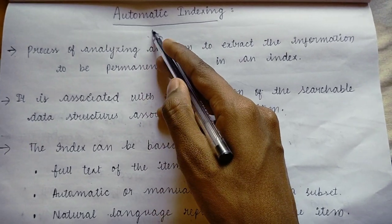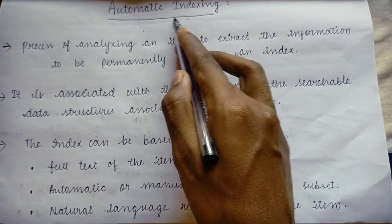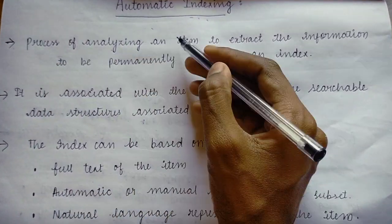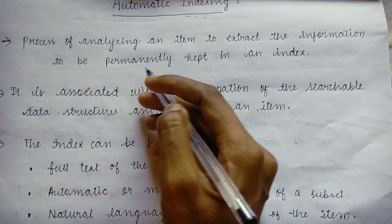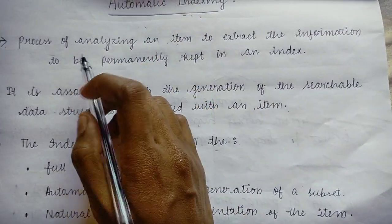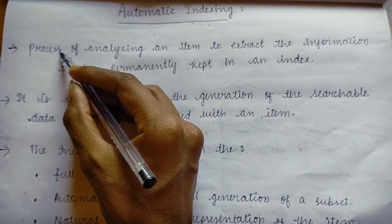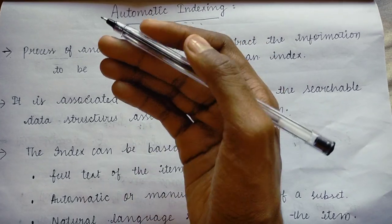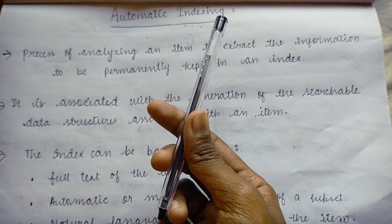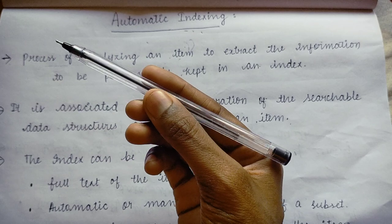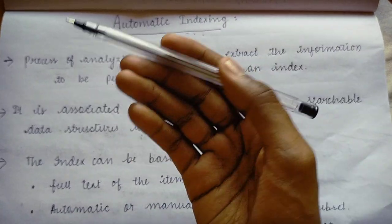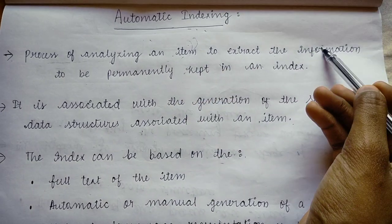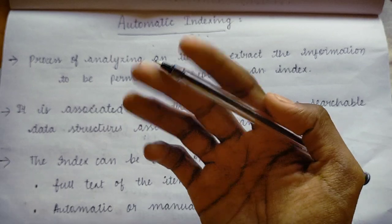In Unit 3, the first topic is automatic indexing. Automatic indexing is a process of analyzing an item to extract the information to be permanently kept in an index. For example, taking a pen as an item — it gets analyzed to extract information such as what kind of lid or refill they are using, or what color — and this information is permanently kept in an index, which is a place where things get stored.